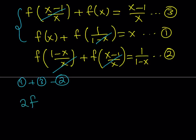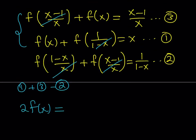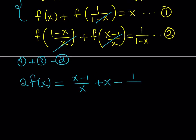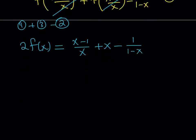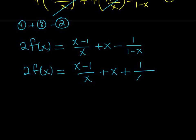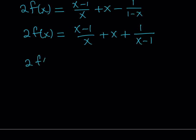Adding equations 1 and 3 and subtracting equation 2 gives 2·f(x) on the left-hand side. On the right-hand side, we get x plus (x-1)/x minus 1/(1-x). I'd like to rewrite 1/(1-x) as positive 1/(x-1) to make things a little easier to work with. Now I'll make a common denominator and solve for f(x).